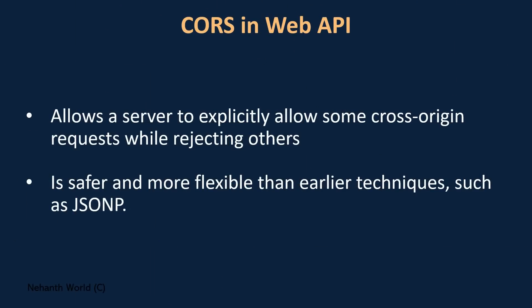The next point is: CORS allows a server to explicitly allow some origins and reject others. When there are requests from other domains, the CORS policy will help the server decide what origins to accept and what origins to reject — we will see that in detail in the next slide. Also, CORS is safer and more flexible than earlier techniques such as JSONP, which people used before CORS came into the market for cross-origin security.